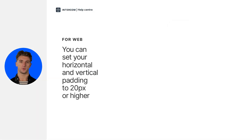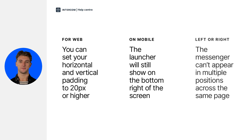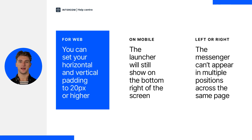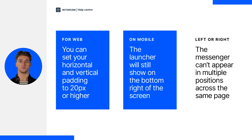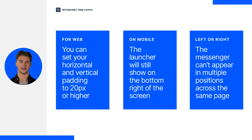Here are a few more details about the messenger's settings. For web, you can also set your horizontal and vertical padding to 20 pixels or higher. On mobile, the launcher will always show on the bottom right of the screen. And last, the messenger can appear in multiple positions across the same page — it's either on the left or right of the screen.